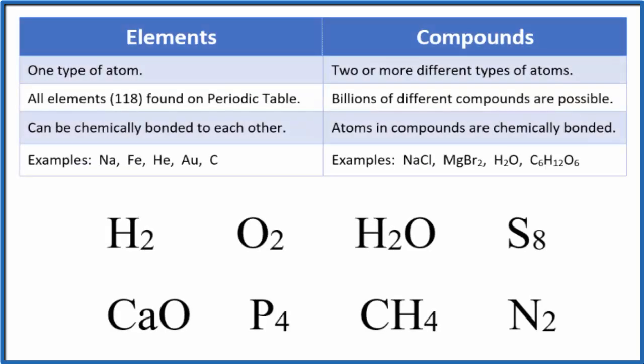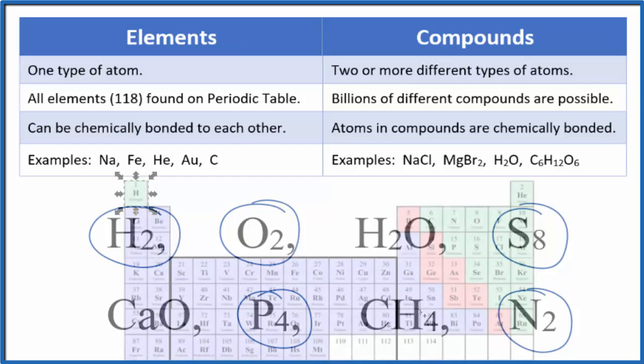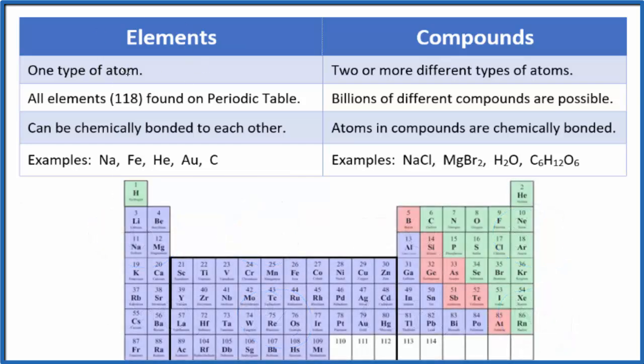We're looking for elements that are only one type of atom, like H2, O2, S8, P4, or N2. These are considered molecular elements. H2O, CaO, CH4, those are compounds. So to recap, elements are one type of atom but we can mix these together to form compounds like H2O. When we have a compound, these elements are chemically bonded together.